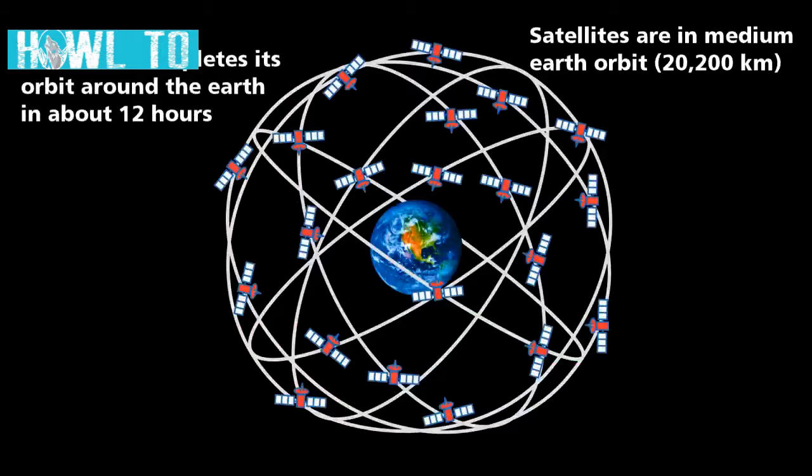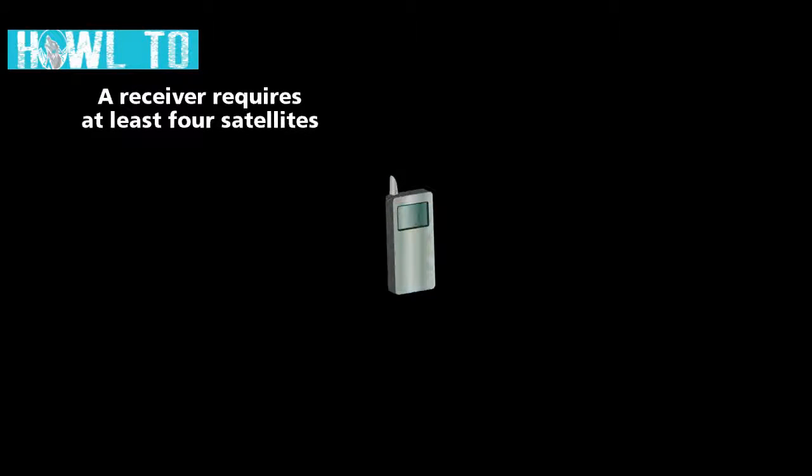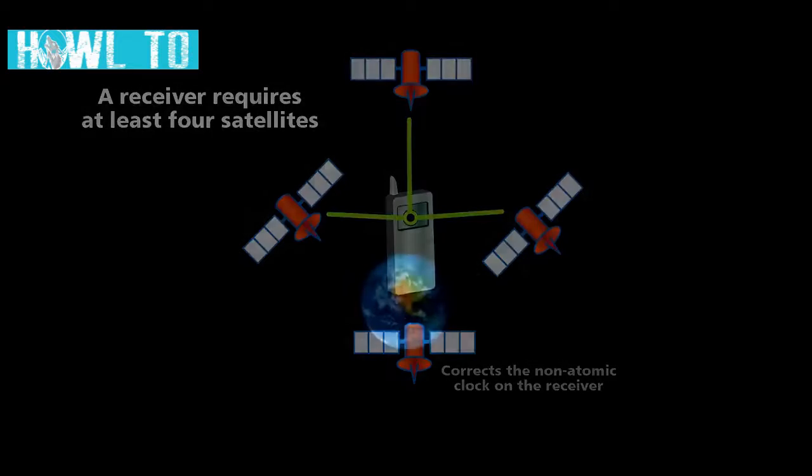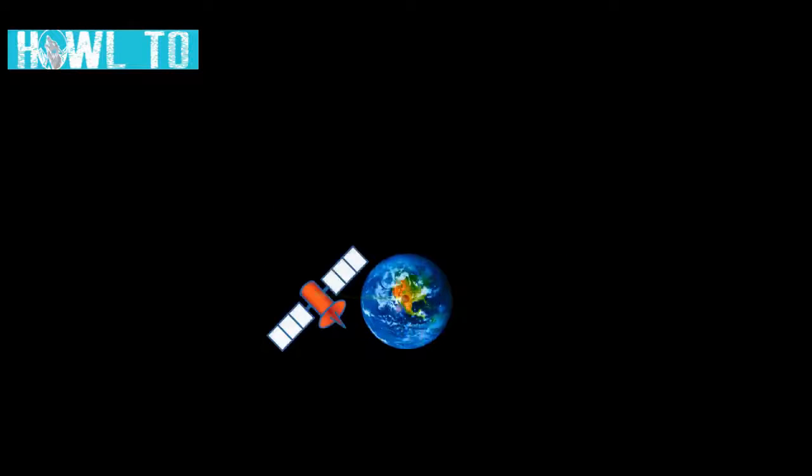The Global Positioning System consists of 24 satellites orbiting the Earth. A GPS receiver uses the position of four of these satellites to locate itself, one to correct the time on the receiver and three to locate its position. Here's how it works. A signal is sent to the receiver from the first satellite that contains that satellite's location and the signal's time of departure. The receiver then multiplies the signal's travel time by the speed of light to calculate its distance from the satellite.